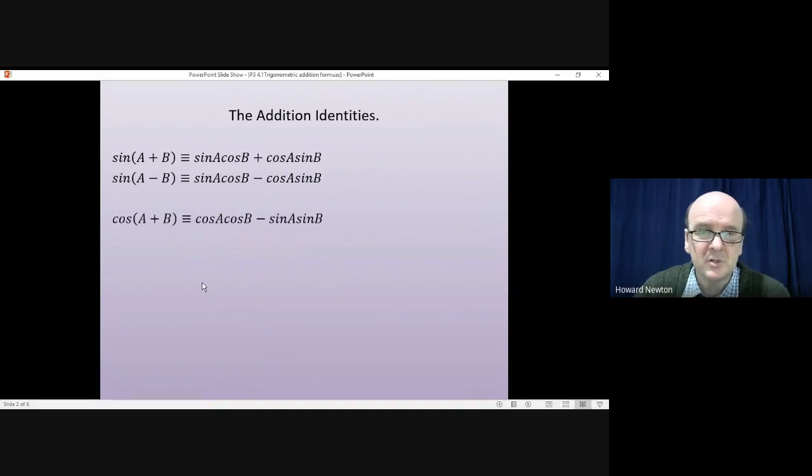The cosine of A plus B is cos A cos B take away sin A sin B, and the cosine of A minus B is cos A cos B plus sin A sin B.